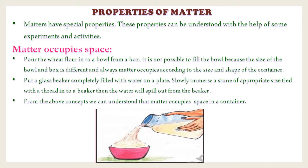Activity one: Pour wheat flour into a bowl from a box. It is not possible to fill the bowl because the size of the bowl and box is different, and matter always occupies space according to the size and shape of the container. Activity two: Put a glass beaker completely filled with water on a plate. Slowly immerse a stone of appropriate size, tied with a thread, into the beaker. The water will spill out from the beaker. You can try this at home. From these activities, we can understand that matter occupies space in a container.